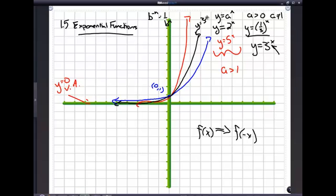Well, remember, f of negative x reflects the graph across the y-axis, just like this. So, this would be y equals 3 to the negative x, affectionately known as one-third to the x.